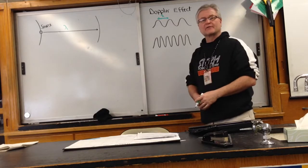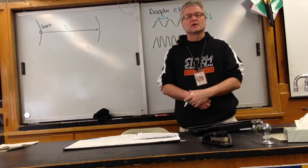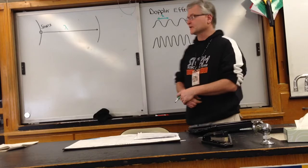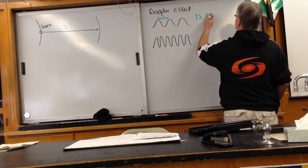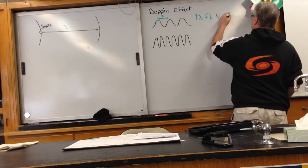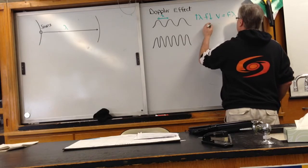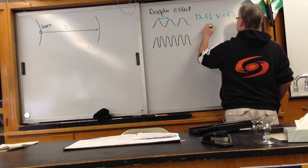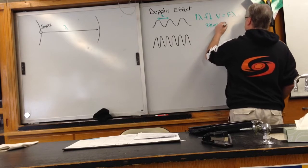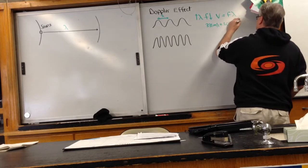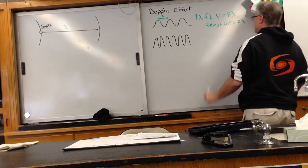Remember, sound waves travel at 331 plus .6 times t. So if we have a velocity, our velocity is equal to f times lambda. The velocity is 331 meters per second plus .6 times the temperature, and that equals the frequency times the wavelength.